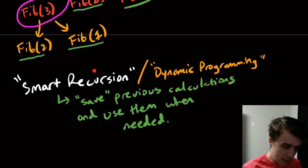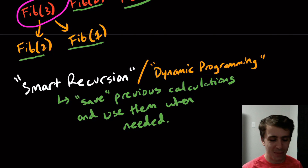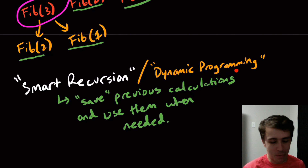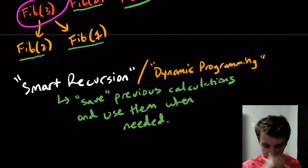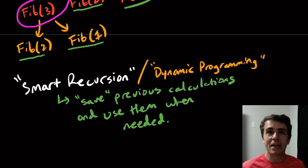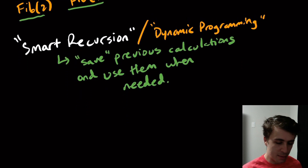Why do I say smart recursion instead of dynamic programming? If you look up the history of this term, it came from a famous computer scientist and mathematician who wanted to get research done but whose boss didn't like mathematics. So he created a term no one could ever object to — and dynamic programming was born. It also has nothing to do with programming in a programming language, and it's not really 'dynamic' in the sense of things always changing; we're simply saving previous calculations.